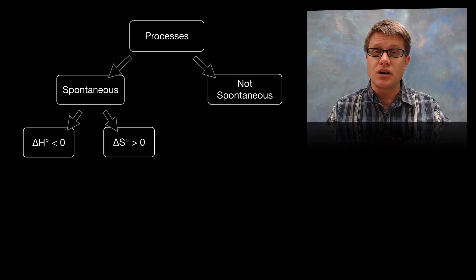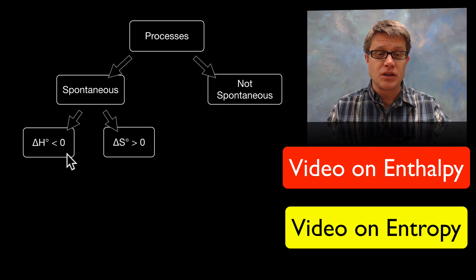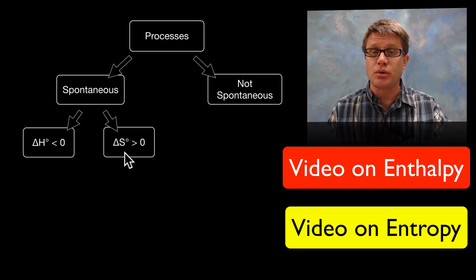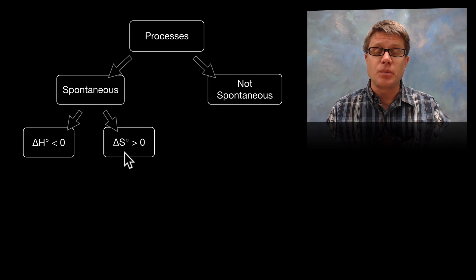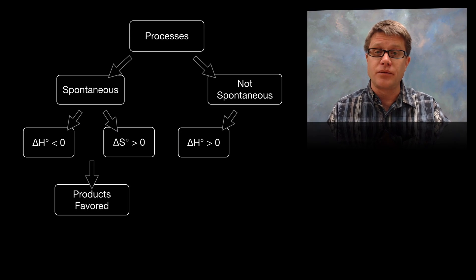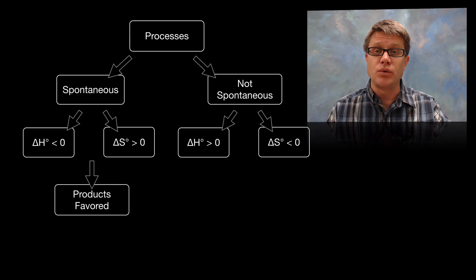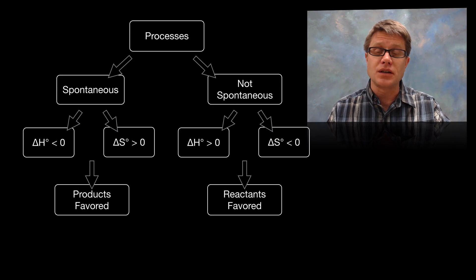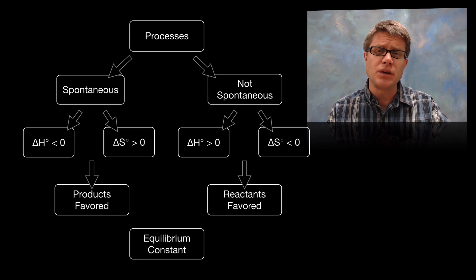If you don't know what these two things are, I'll put links to videos about both enthalpy and entropy. But if we ever see a decrease in that amount of internal energy and an increase in that randomness or dispersal of matter, we know that it's a spontaneous reaction. Any spontaneous process is going to favor the products. If it's non-spontaneous, we can know right away if we see an increase in enthalpy and a decrease in entropy — that's going to favor the reactants.